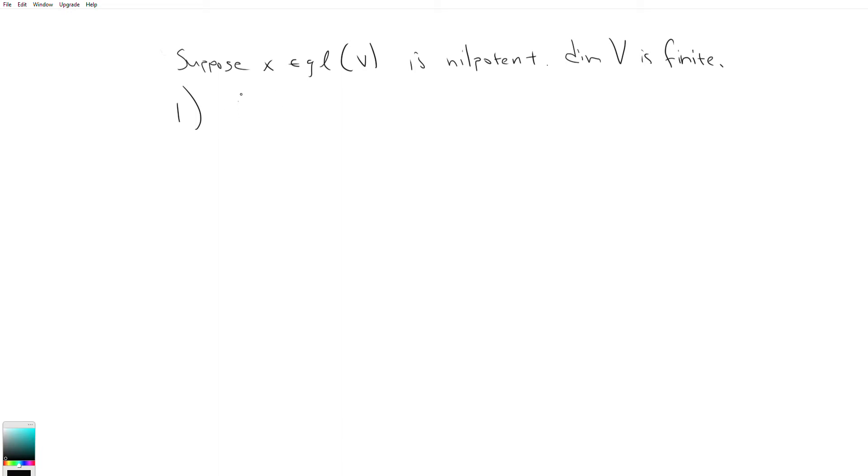And so the first fact is that there exists v element of V, not equal to zero, such that xv is equal to zero. And the second fact is, ad x is also nilpotent under this supposition. And so these are actually very easy to prove, and I hope this video is less than five minutes. So the first one goes as follows.